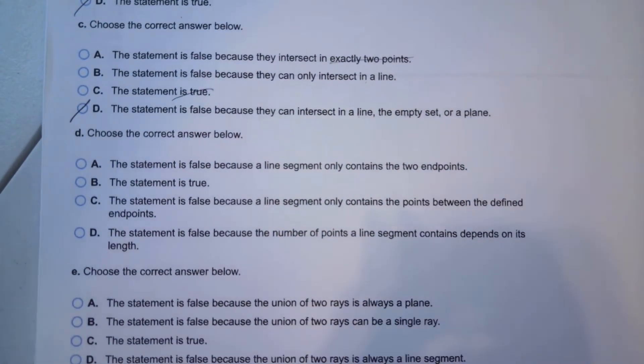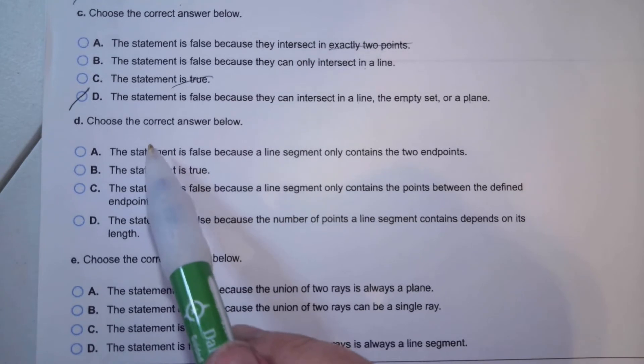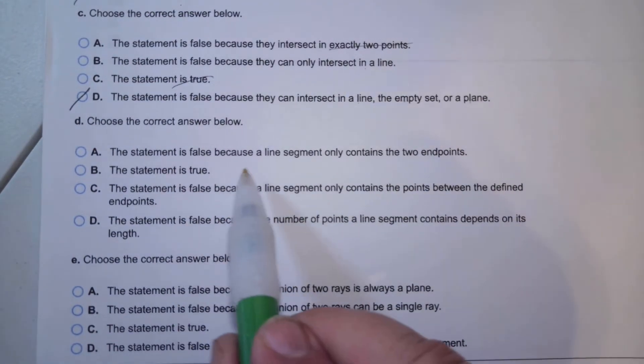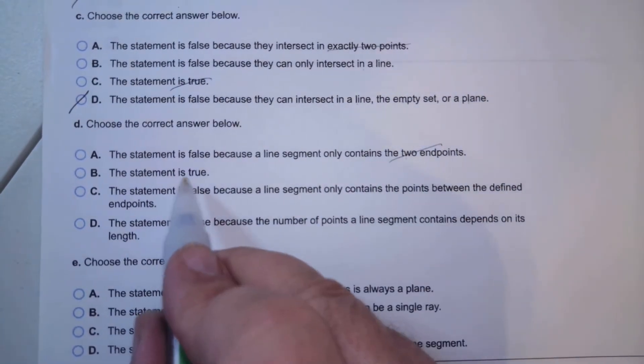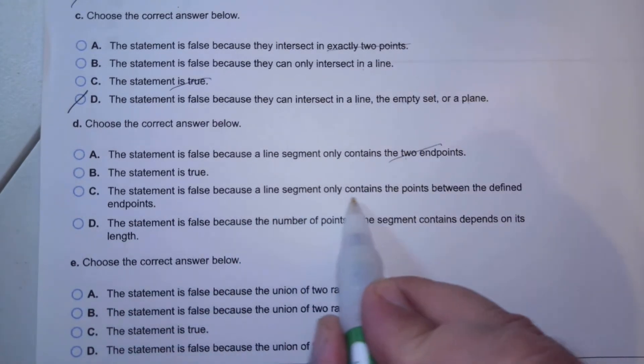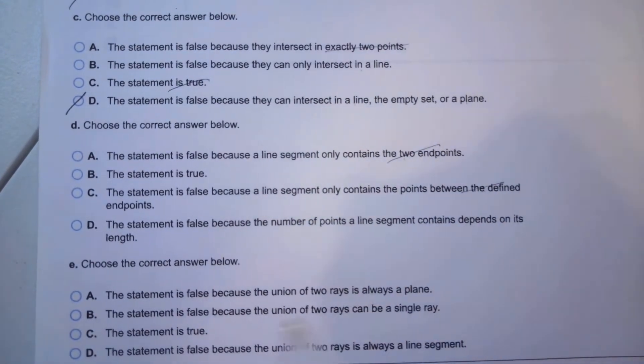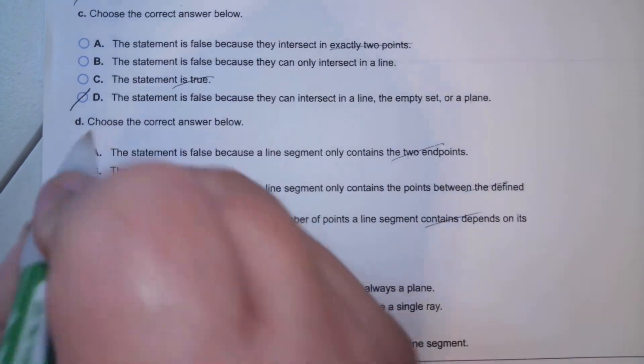Number D: a line segment contains an infinite number of points. A line segment contains an infinite number of points - true. It has all points between them. The points between them, there are an infinite number of points. The statement is not false because the number of points doesn't depend on its length. So it's B.